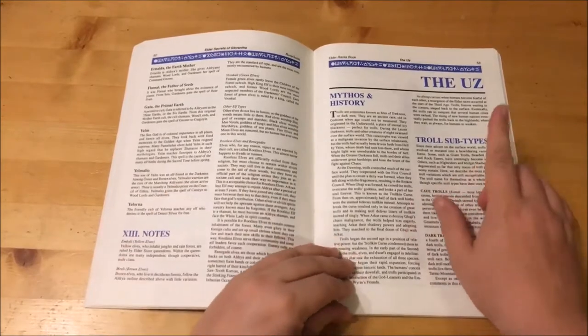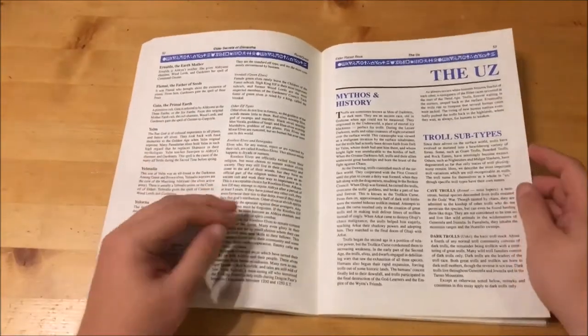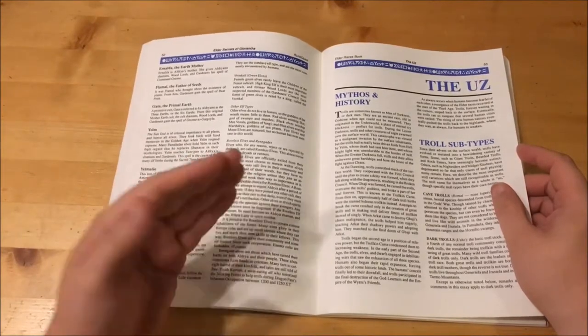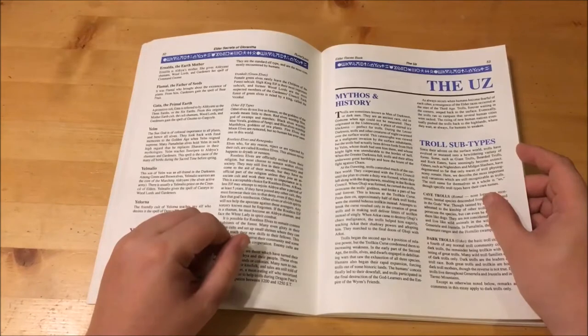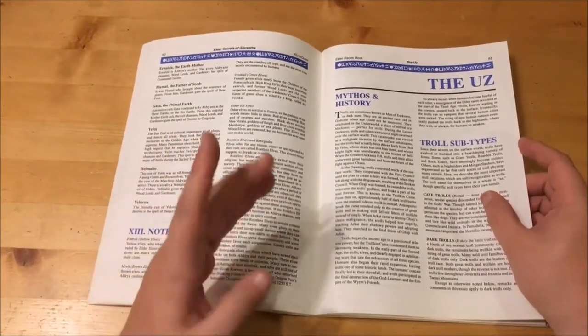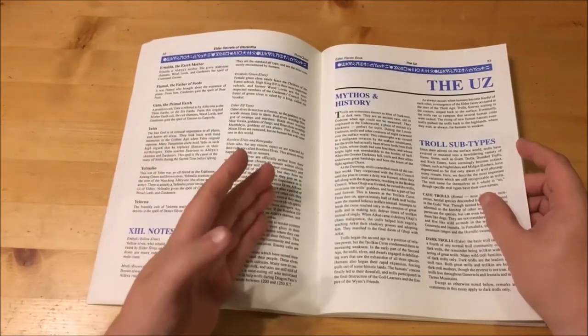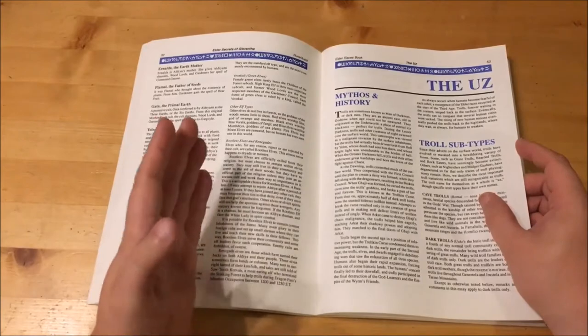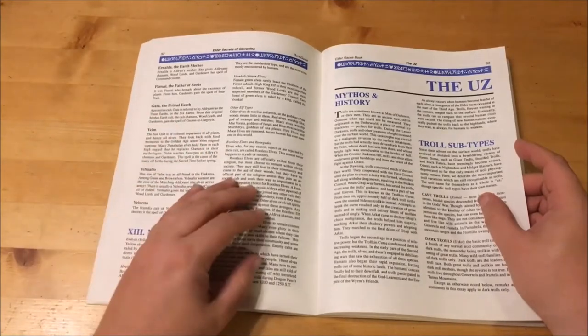Next up is the trolls of Glorantha, the Uz. Trolls are an ancient race even old in god time when age could not be measured and originated in the underworld. During the lesser darkness trolls swarmed the surface world and were viewed as an invasion. However the trolls had been driven from hell by the arrival of Yelm. When the greater darkness fell, trolls bore the brunt of the fight against chaos. At the first dawn, trolls controlled much of the surface world and even cooperated with the first council up until they decided to create a deity. At which point the trolls and dragonewts left, resulting in the broken council. When Gabaji was created, he cursed the trolls, overcame their goddess and broke a part of their soul forever. The Trollkin curse as it is known means that almost 50% of dark troll birth results in stunted, malformed Trollkin. Attempts to break the curse results in great trolls and litters of Trollkin. The Trollkin curse has weakened the species. They aided Arkat in his quest to destroy Gabaji, teaching him their powers and making him a troll.